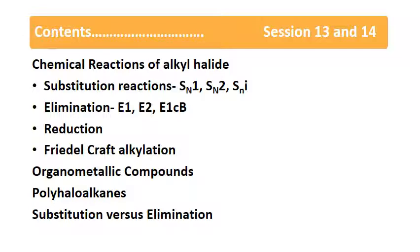When alkyl halides react with sodium acetylides, they form higher alkynes. This reaction always occurs at the terminal position to get an alkyne — a triple bond compound. Next is the replacement by the carboxylate group, that is the formation of an ester. Whenever an alkyl halide reacts with silver acetate, there is a formation of ester.